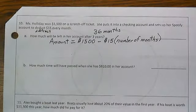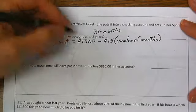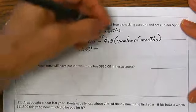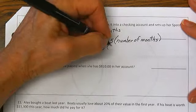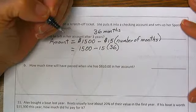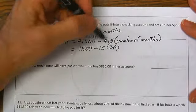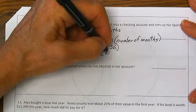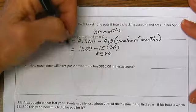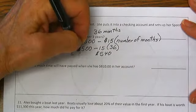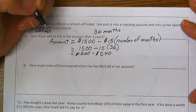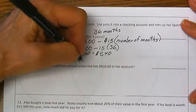The next month, another $15, and so forth. So the amount of money is going to be equal to $1,500 minus $15 times 36 months. Because I've already done this on my calculator, 15 times 36 is $540. So the amount of money is going to be equal to $1,500 minus $540, or $960.